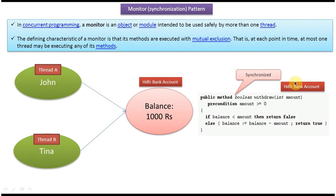Now if you read the definition again you will understand: in concurrent programming, a monitor is an object or model intended to be used safely by more than one thread — the HDFC bank account is that object. We make it safe by putting the synchronized keyword. The defining characteristic of a monitor is that its methods are executed with mutual exclusion — at each point in time, at most one thread may be executing any of its methods. Once you put synchronized, only one thread can access this method; other threads have to wait until it finishes. This is about the monitor or synchronization design pattern. Thanks for watching, bye.